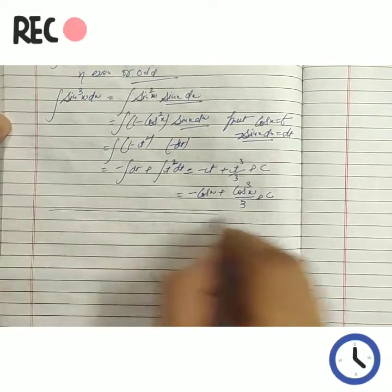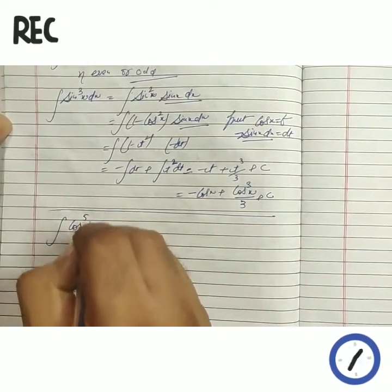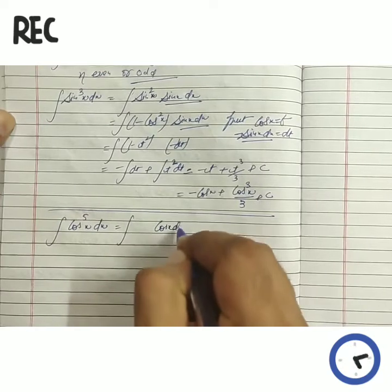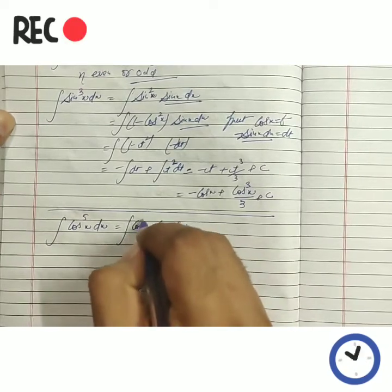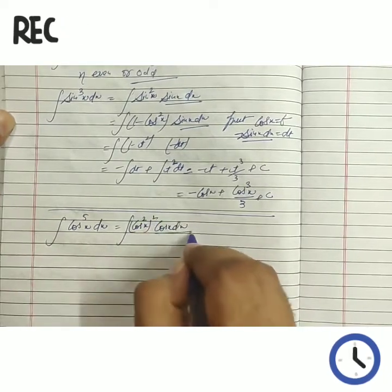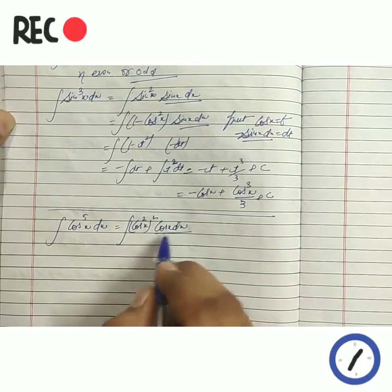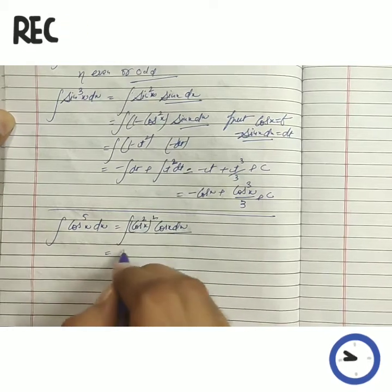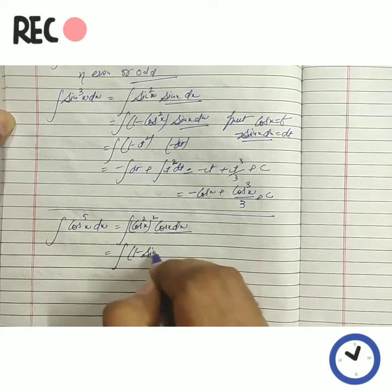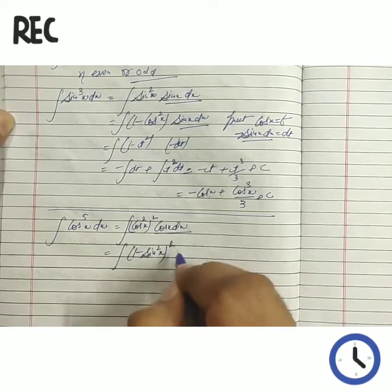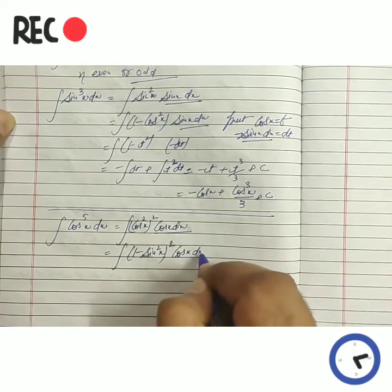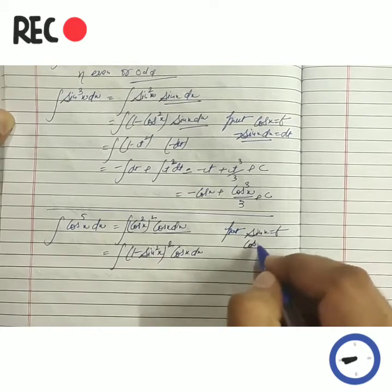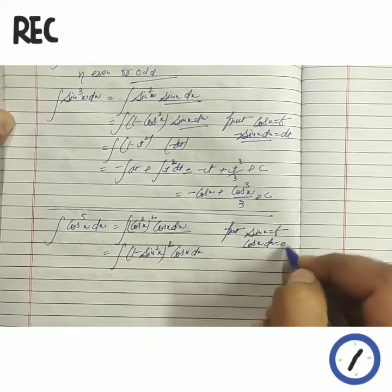Next we are going to take cos raised to an odd power, maybe given as power 5. The same method we are going to do. Separate one power. The other part we have to make such that it should be the derivative of a function. The derivative of sine function is given by cosine function. We have a relation between cosine scale and sine scale, that's why we are changing cosine scale into sine using cos²θ = 1 − sin²θ. Now we are going to use substitution method, putting sin x = t, so d(sin x) = cos x dx = dt.